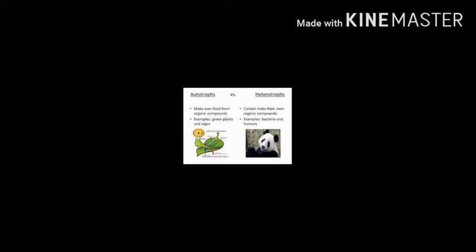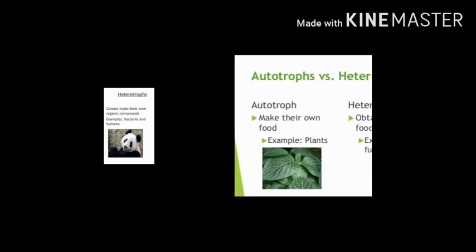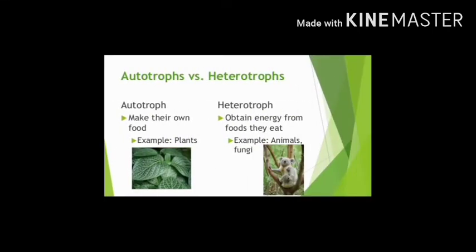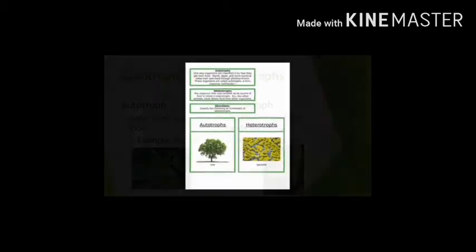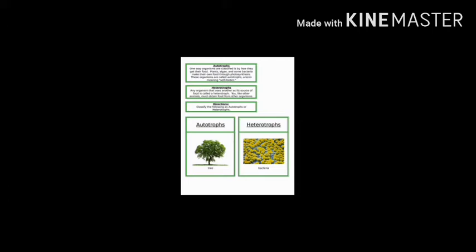Heterotrophs are living organisms which depend on autotrophs directly or indirectly for their food. They are also called consumers. For example, animals and human beings. On the basis of eating habits, heterotrophs can also be divided into various categories.